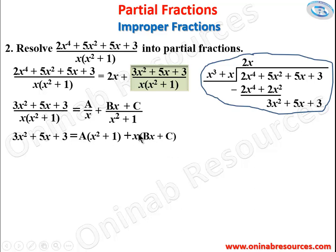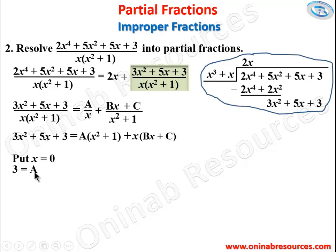Setting x = 0 to find A: the Bx+C term vanishes. We get 3 = A(0+1) = A, so A = 3.